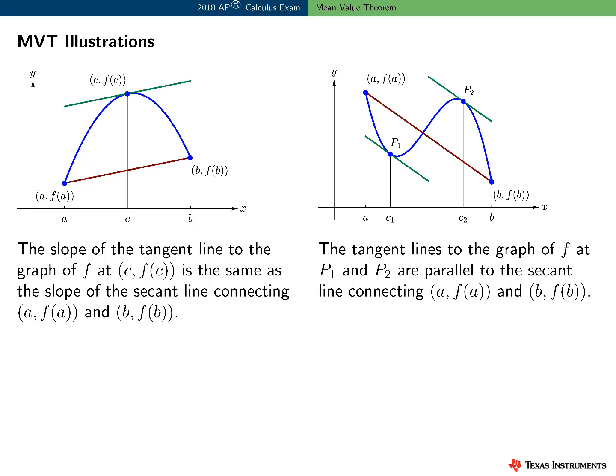Here are two illustrations of the mean value theorem. Another way to think about this is: there is a point p between a, f of a, and b, f of b, on the graph of f, where the tangent line is parallel to the secant line.